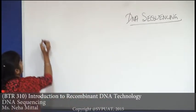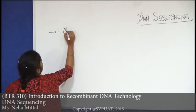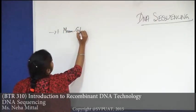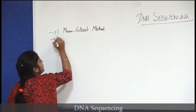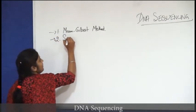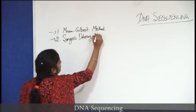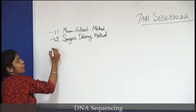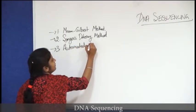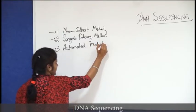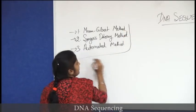DNA sequencing. Generally there are three methods of DNA sequencing. First is the Maxim Gilbert method, second is Sanger's Dideoxy method of DNA sequencing, and third is automated DNA sequencing. Discussing these methods in detail, first of all we will discuss the Maxim Gilbert method.